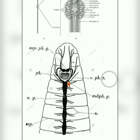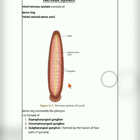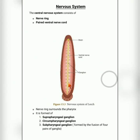The subpharyngeal ganglion is made up of a diffusion of four pairs of ganglia. So to summarize, the nervous system has two main parts: the nerve ring in the anterior part near the pharynx, which acts as the brain, and the paired ventral nerve cord.